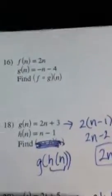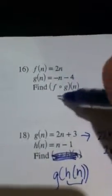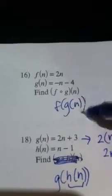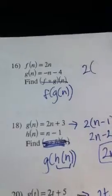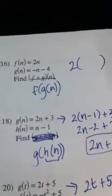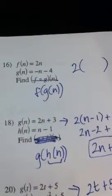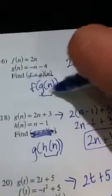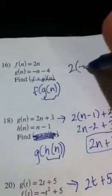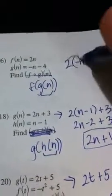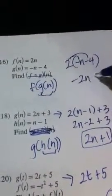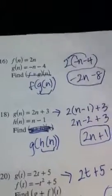Let's do one more. This is F of G of N. Take your F function, which is 2 times N, but replace the N. You see how I've just left a blank where the N was? And in its place, I'm putting the other function, G of N. So in its place, I put negative N minus 4. Distribute, and you get negative 2N minus 8. Final answer.